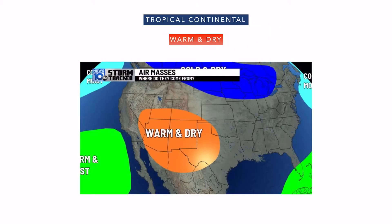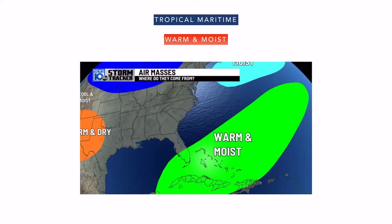Tropical continental air mass: tropical was warm and continental was over land, so this air mass will be warm and dry. And similarly, the tropical maritime will be warm and moist, because maritime was over water and water has a lot of humidity making it moist.